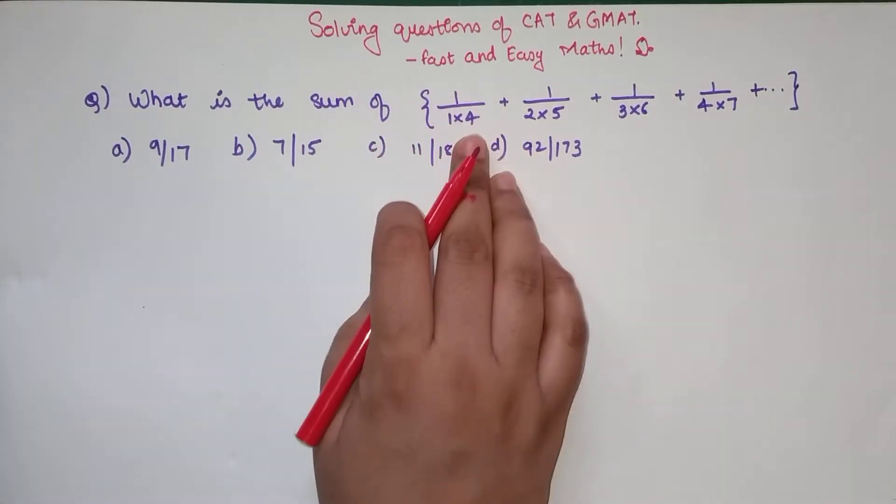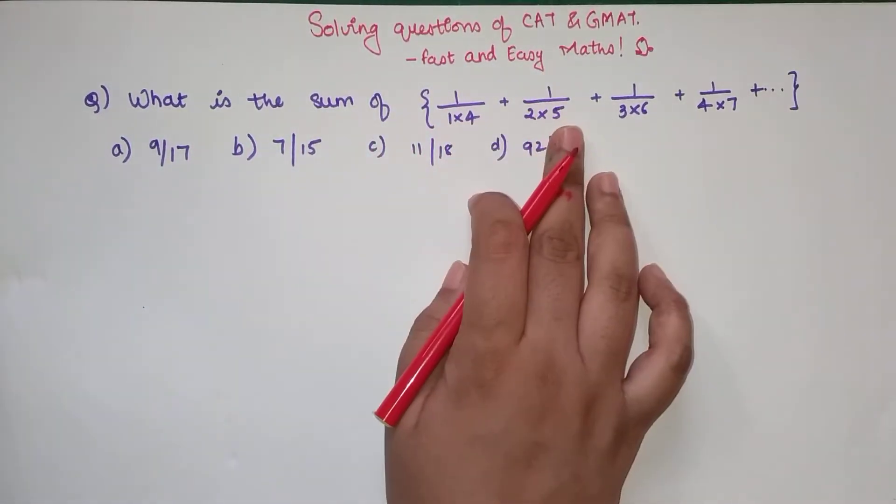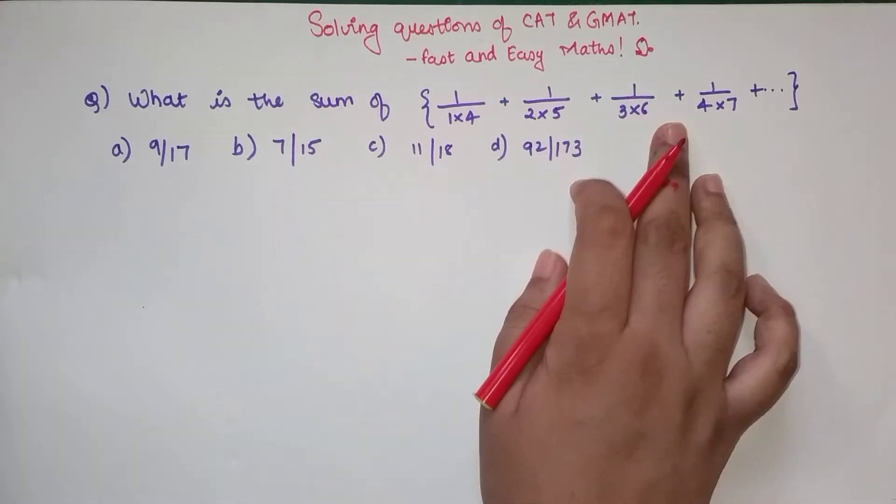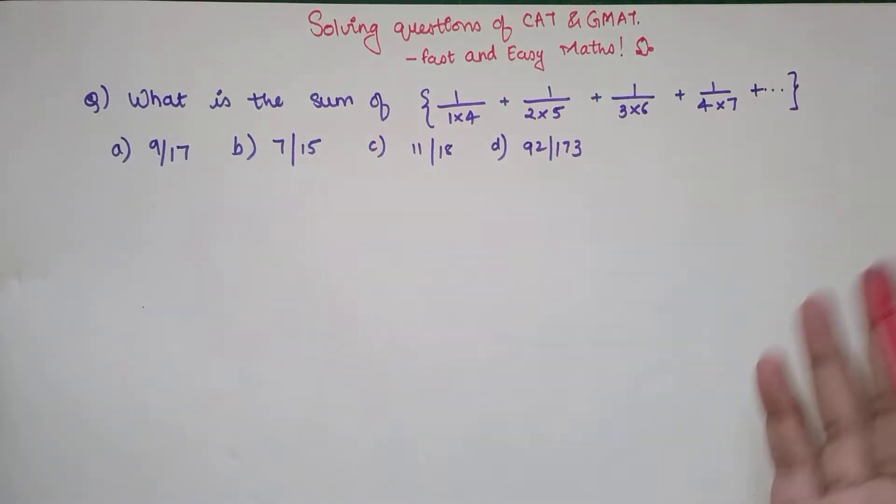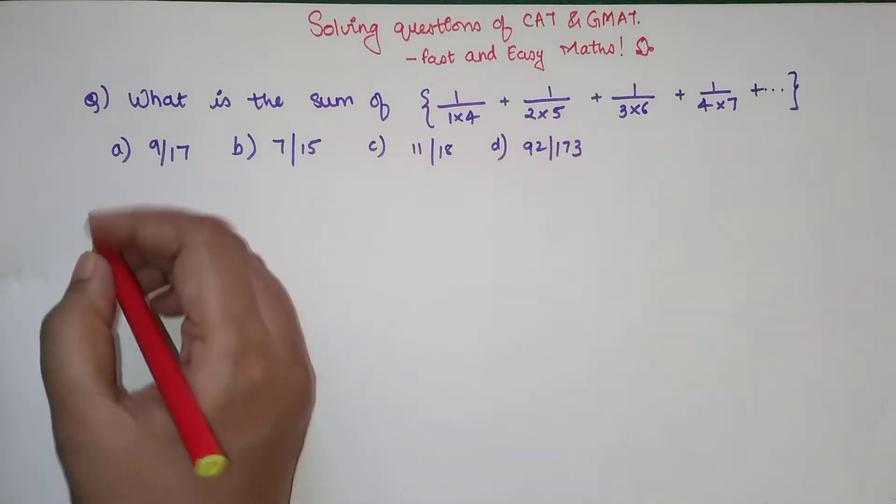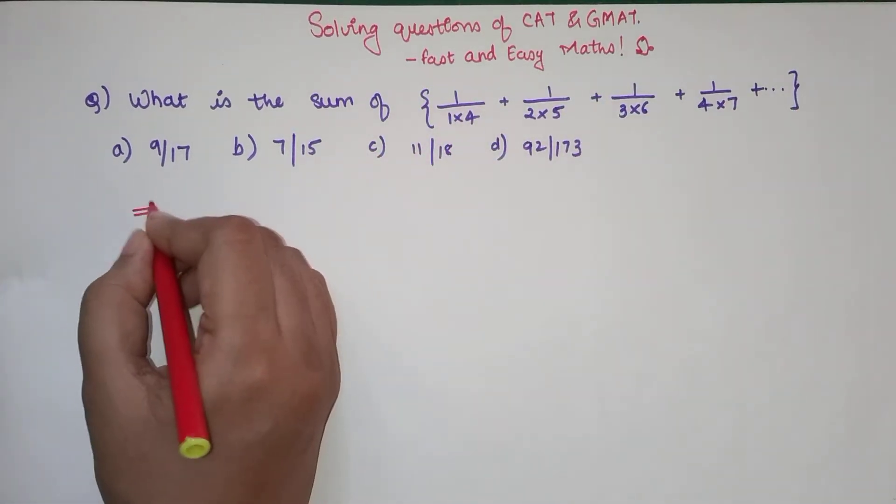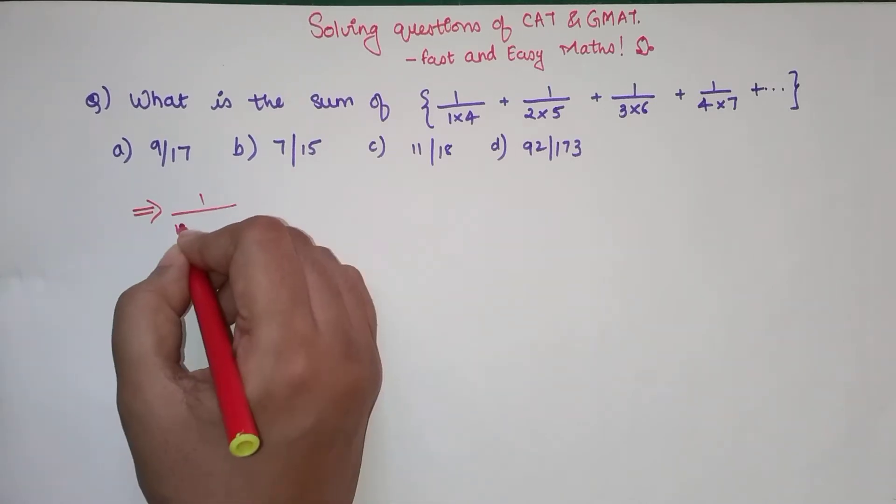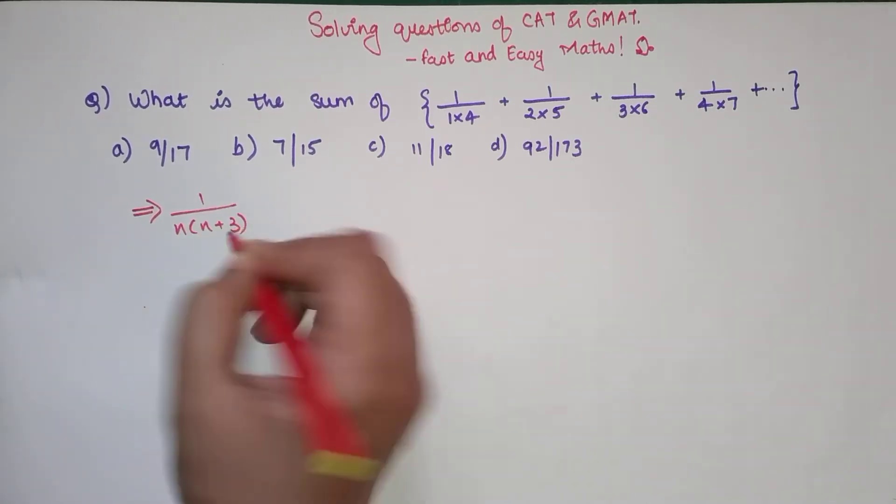So what is the sum of 1 upon 1 into 4 plus 1 upon 2 into 5 plus 1 upon 3 into 6 plus 1 upon 4 into 7 and so on and so forth? Now if you look at all of these fractions, the general form I can say is nothing but 1 upon n into n plus 3.